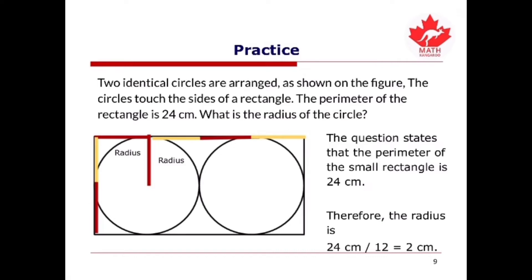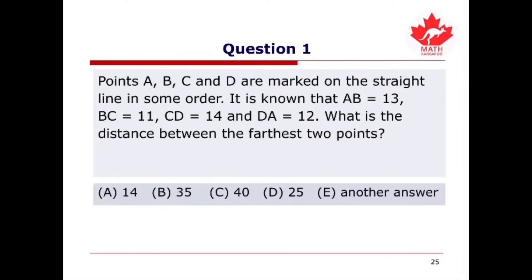We are now ready to solve some questions together. Let's look at question number 1. Points A, B, C, and D are marked on a straight line in some order. It is known that AB equals 13, BC equals 11, CD equals 14, and DA equals 12. What is the distance between the farthest two points?